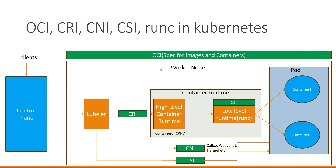Once a particular worker node is identified, the kubelet in the worker node will take the responsibility of deploying that application as pods inside that worker node. Kubelet is the agent present in every worker node which deploys the applications as pods. Once the deployment completes, the kubelet also sends the status of the containers back to the control plane.